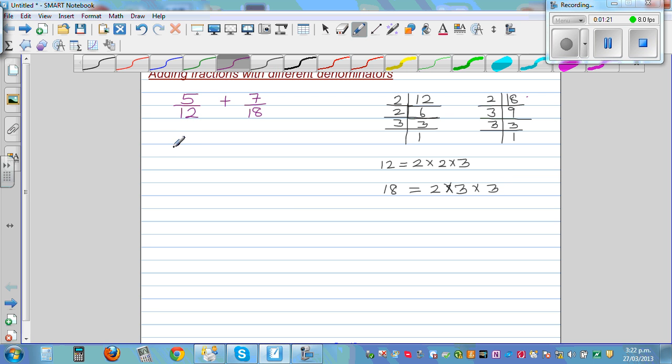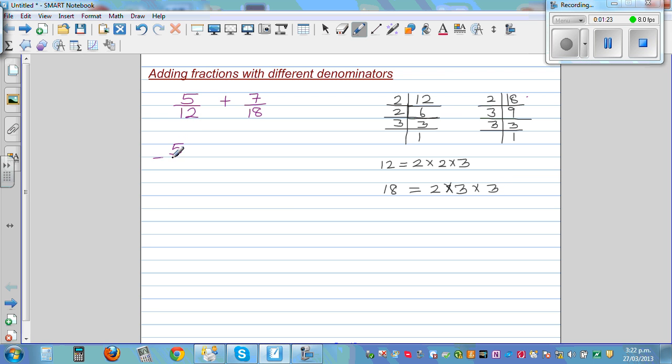So this becomes 5 over 2 times 2 times 3. And this becomes 7 over 2 times 3 times 3.